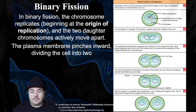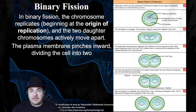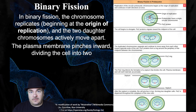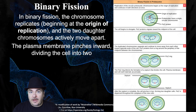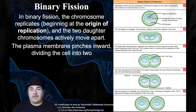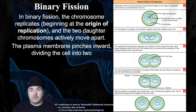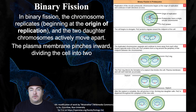That was a brief lecture on cytokinesis and binary fission. In the next and last lecture in this series, we're going to talk about — back to eukaryotic cells — how we regulate our cell cycle: how we control when the cell cycle happens versus when it doesn't, when you're doing cell division versus when you're not. So until then, this has been Dr. Sage.